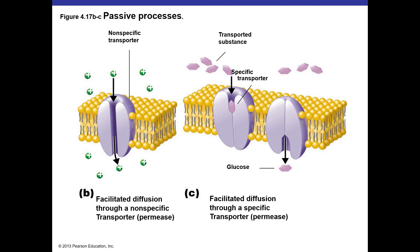This passive process can use either a nonspecific transporter or permease — essentially a protein channel that allows things to pass through. You can also have channels that are more specific, working like a lock and key, fitting a specific molecule that needs to be transported. For example, a specific transporter recognizes a glucose molecule and opens the gate to shuttle that molecule across the membrane.